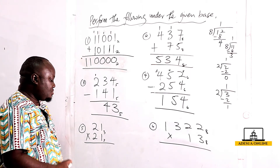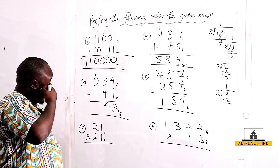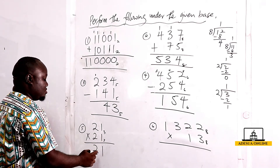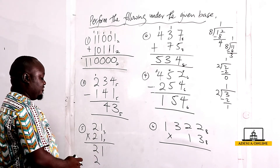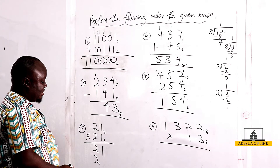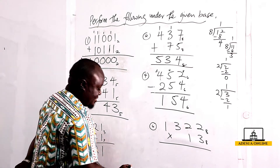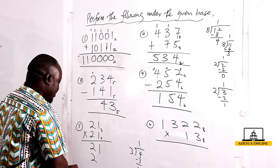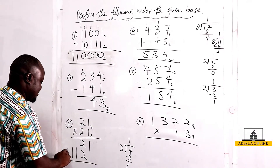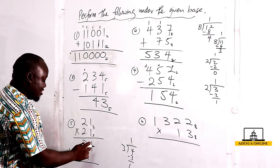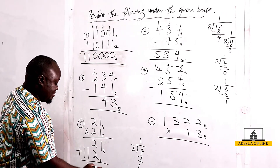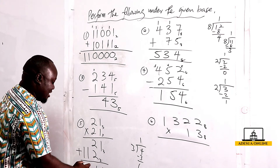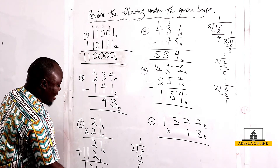Now we are going to perform multiplication in a given base — base three. We do our normal multiplication: one times one is one, one times two is two, two times one is two, and two times two is four. Four in base three: four divided by three gives one remainder one, so we have one one. When we add in base three: two plus two is four, four in base three is one one, so one carry one; one plus one is two. This gives us 1211 to the base three.